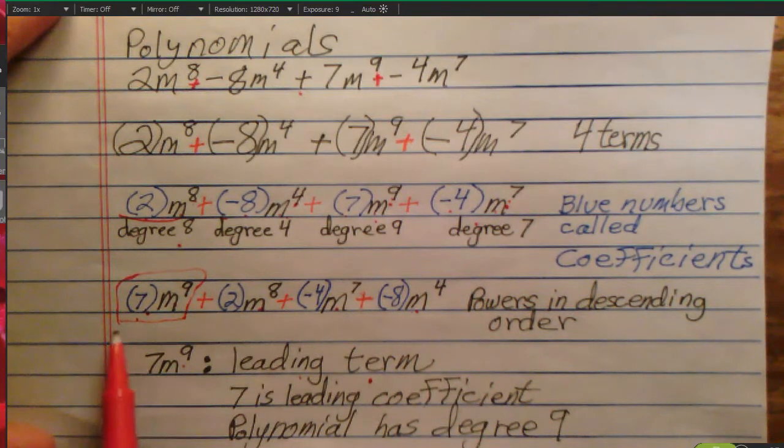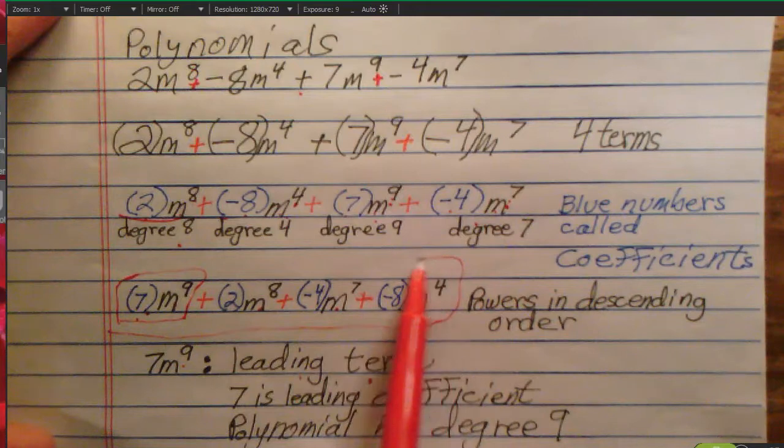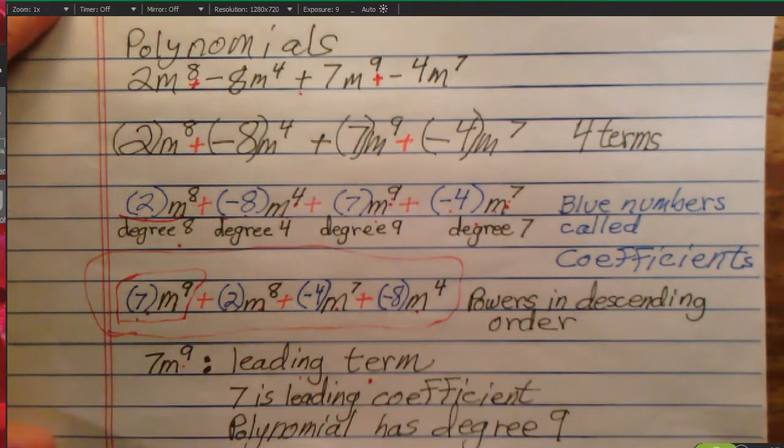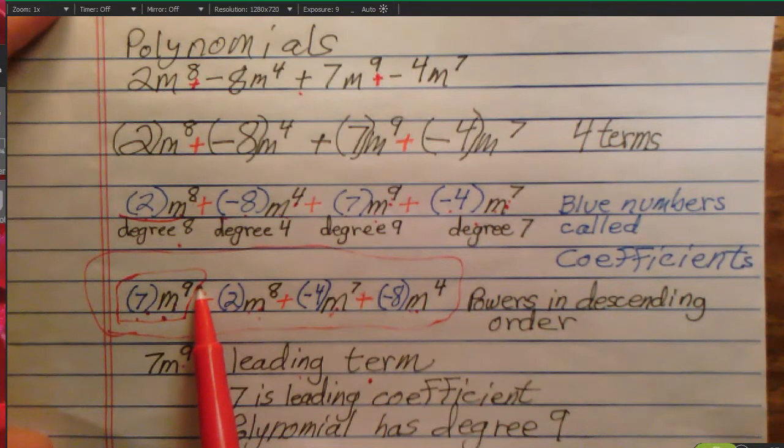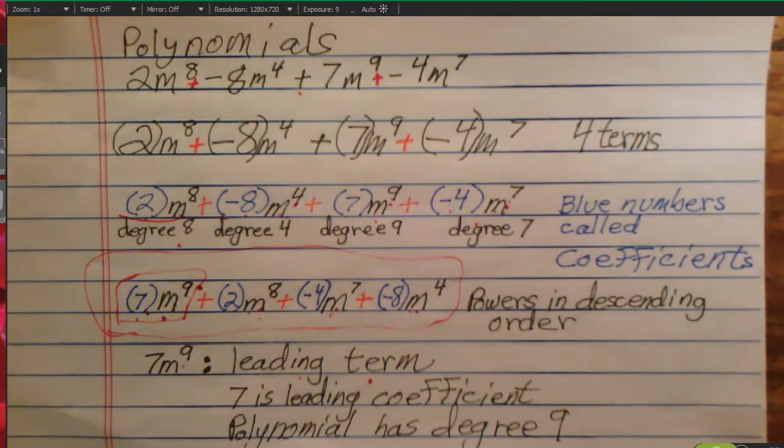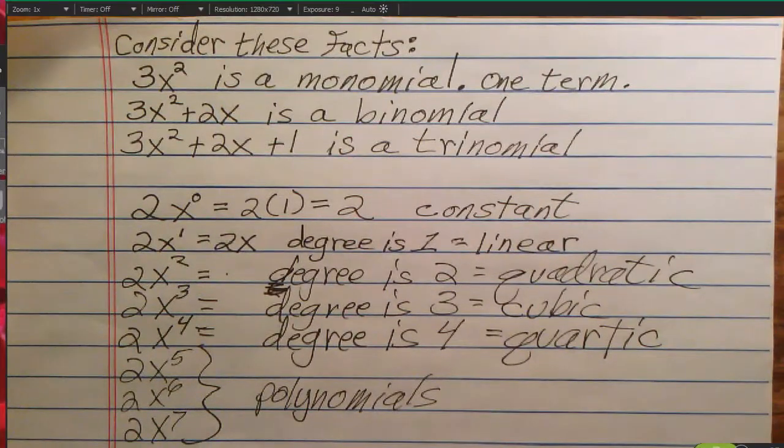And the polynomial, this polynomial, which is what this is, polynomial of four terms, we would say that even though each term has its own degree, the degree of the polynomial as a whole is 9, the highest power. Vocabulary is not always important, but in this case, when you're dealing with polynomials, I'm afraid it is.